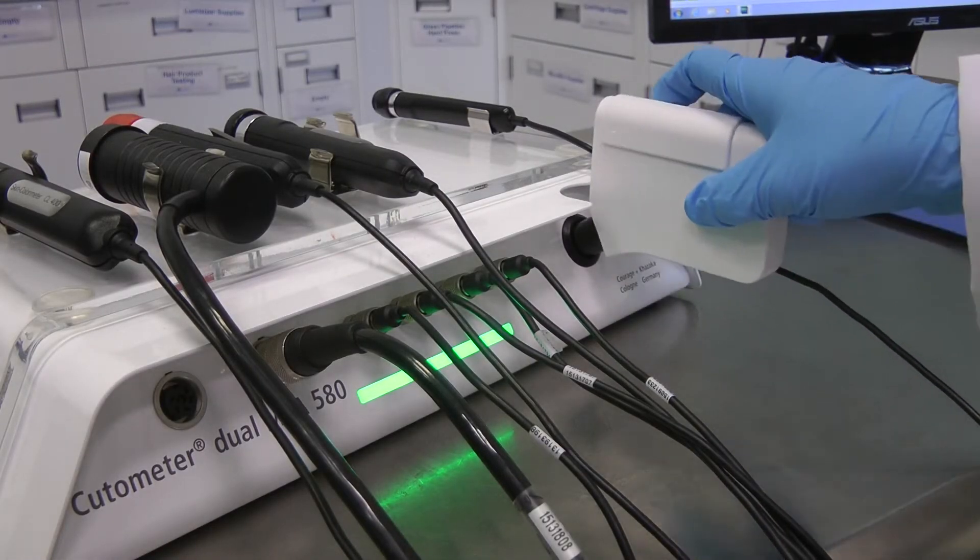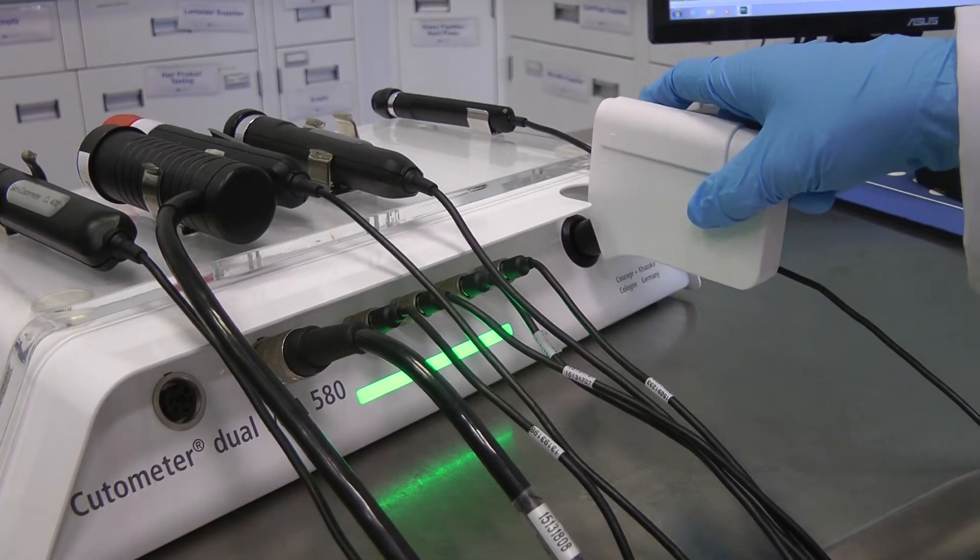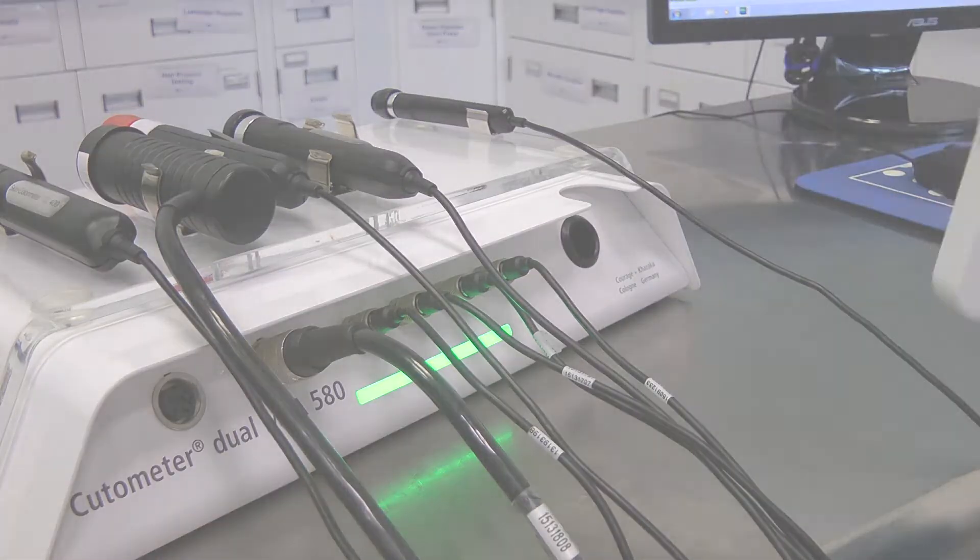First, the baseline measurement is taken on the forehead of a participant. A special cartridge is inserted to the equipment, and then after the trigger, it is placed on the forehead of the participant for 30 seconds.